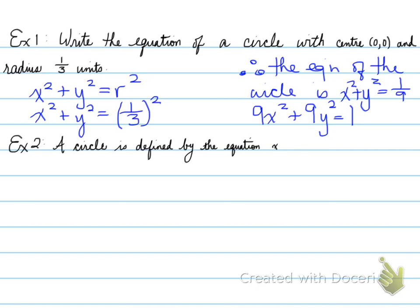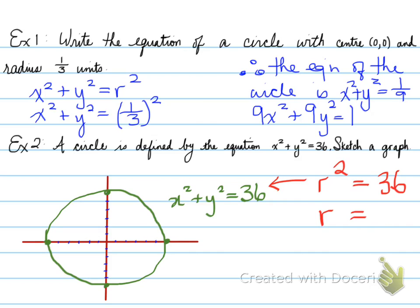Example number two. A circle is defined by the equation x squared plus y squared equals 36, and you're asked to sketch a graph. Think back to the formula x squared plus y squared equals r squared, and you find out that r squared is 36. How long is r? That will be 6. So we sketch our graph. We take out the points and we go 6 across, 6 up, 6 down, and 6 left. The radius is 6 and the diameter is 12.